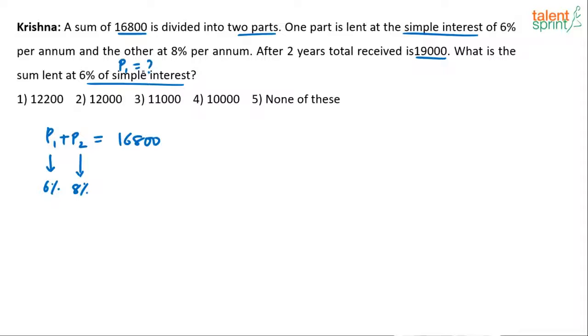From P1 and P2, we need to find P1. We already have one equation in terms of P1 and P2: P1 plus P2 equals 16,800. This is equation number one.